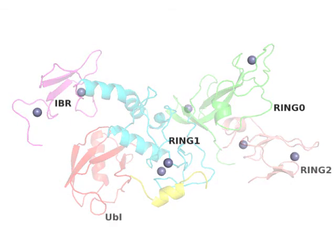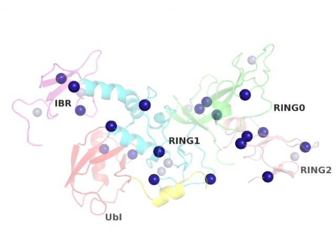Over 120 mutations in Parkin have been identified. These mutation sites, some of which are shown here as blue spheres, are found throughout the protein, which implies that all domains are required for its normal function.